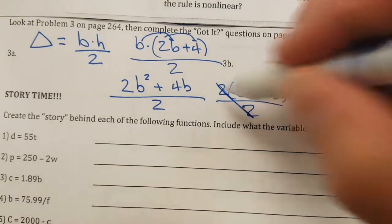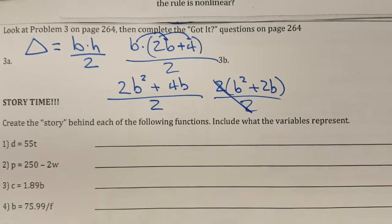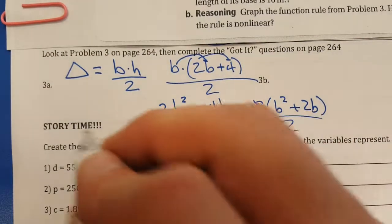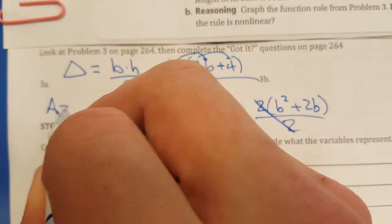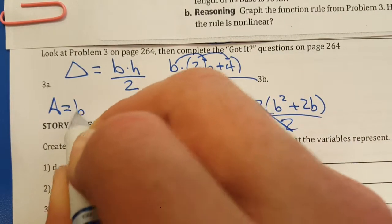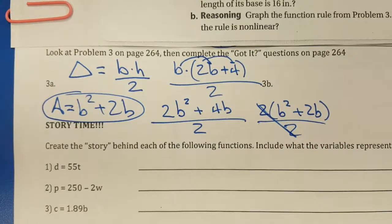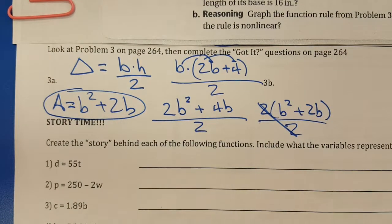Now watch what happens when I divide by 2: those guys cancel—oops, sorry, hit the camera—those guys cancel right there. So I don't have a lot of space here, but here's my actual formula. So my area is going to equal B squared plus 2B. Okay, so there's my function. That was a good one. Holy cow, that one was challenging.